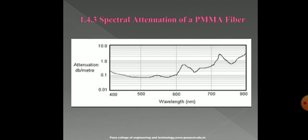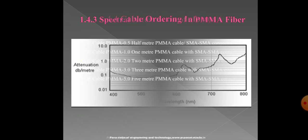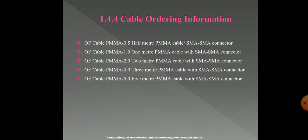This shows the spectral attenuation of the PMMA cable. This diagram illustrates why we choose the PMMA cable over others — because the attenuation of this cable is very low. Regarding cable ordering, the PMMA cable is available in SMA-SMA connectorized versions of 0.5, 1.0, 2.0, 3.0, and 5.0 meters. Depending on the application, any one of these lengths can be selected.